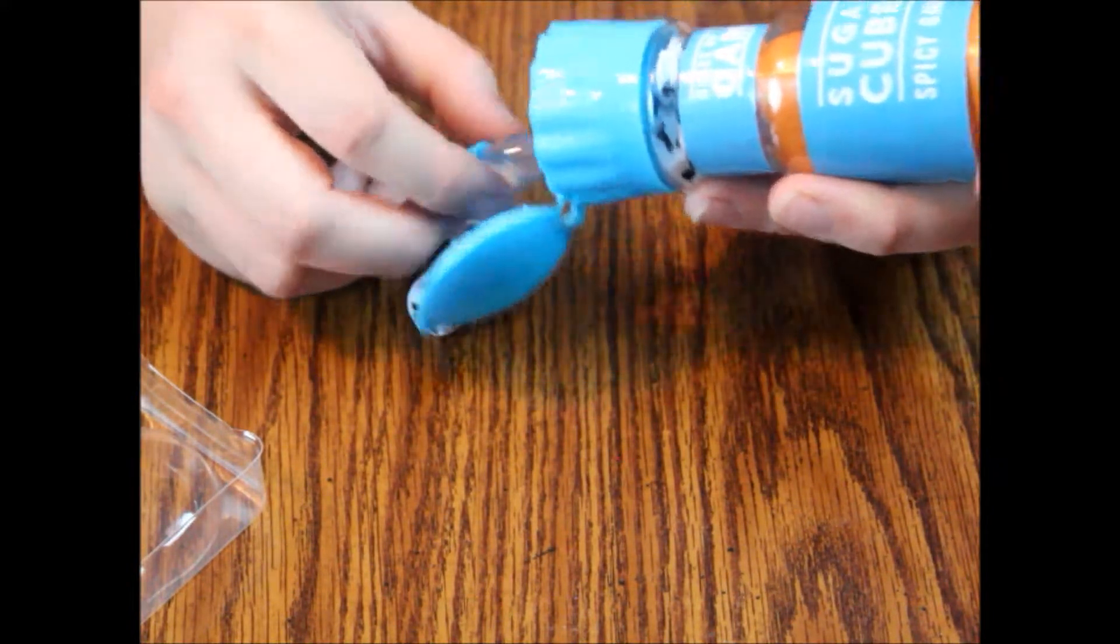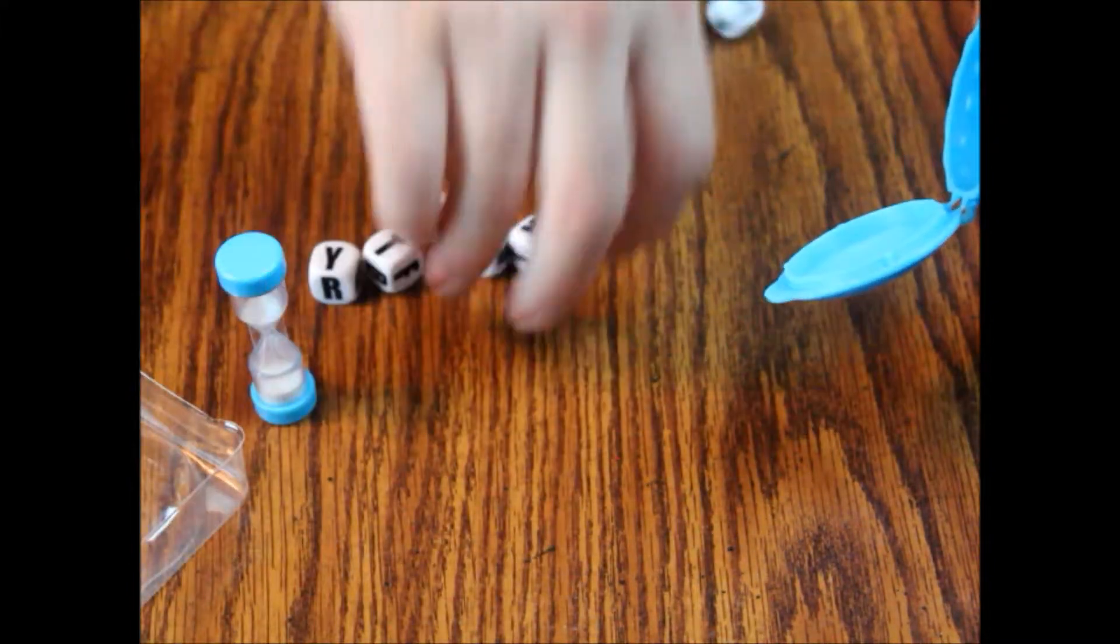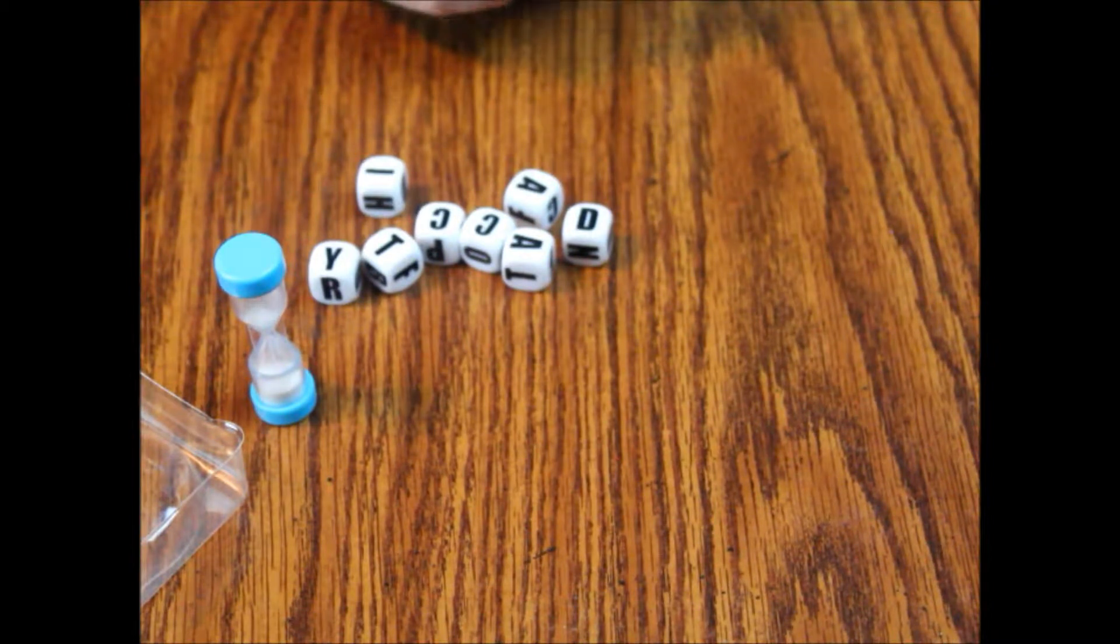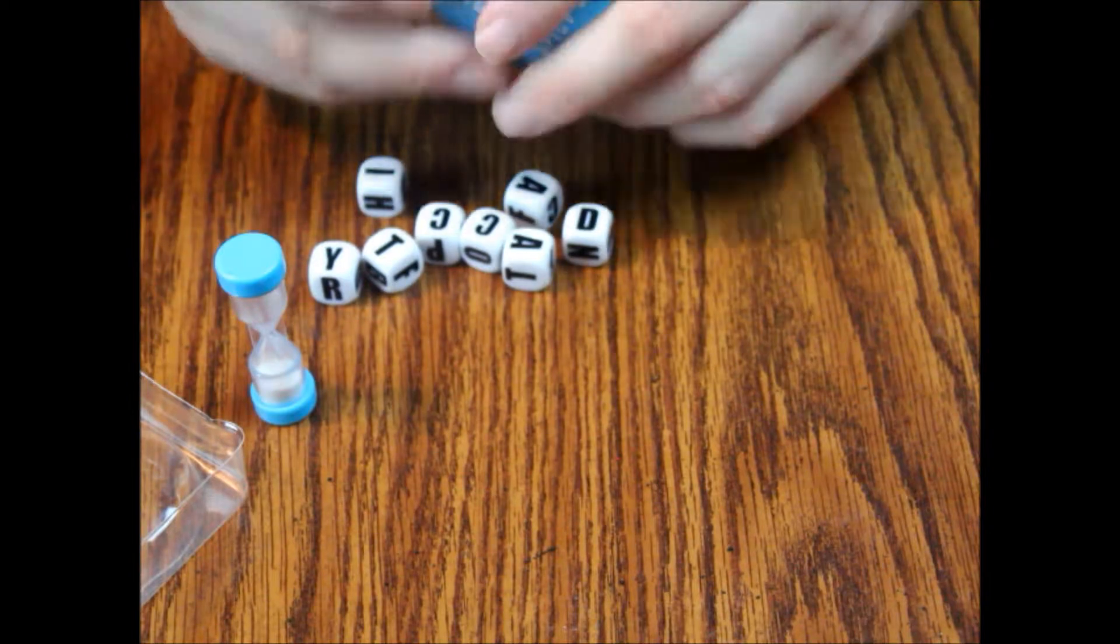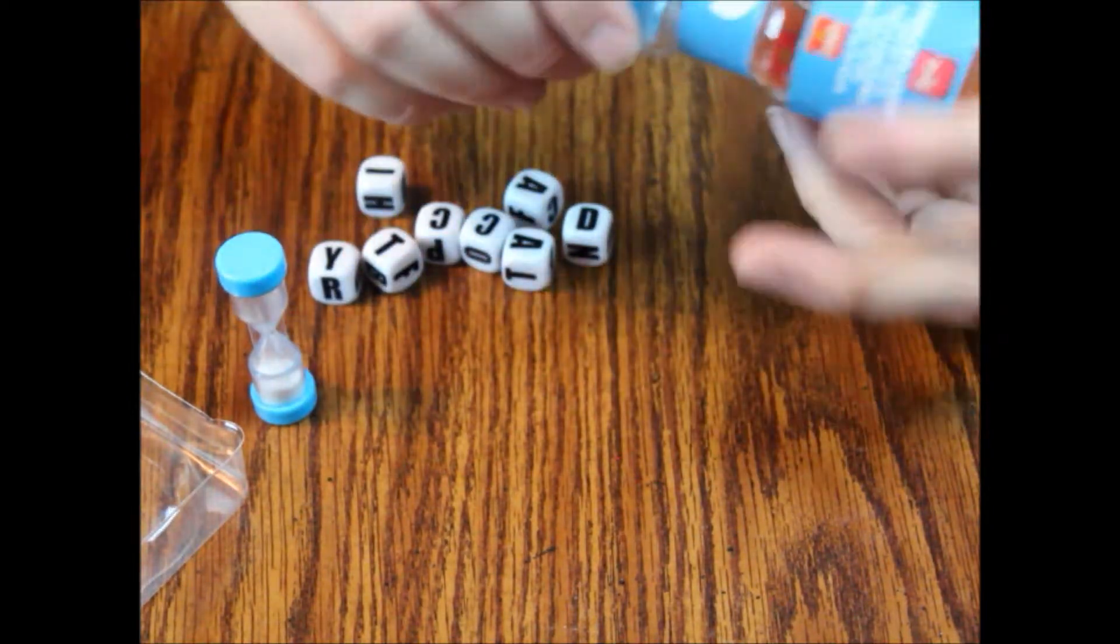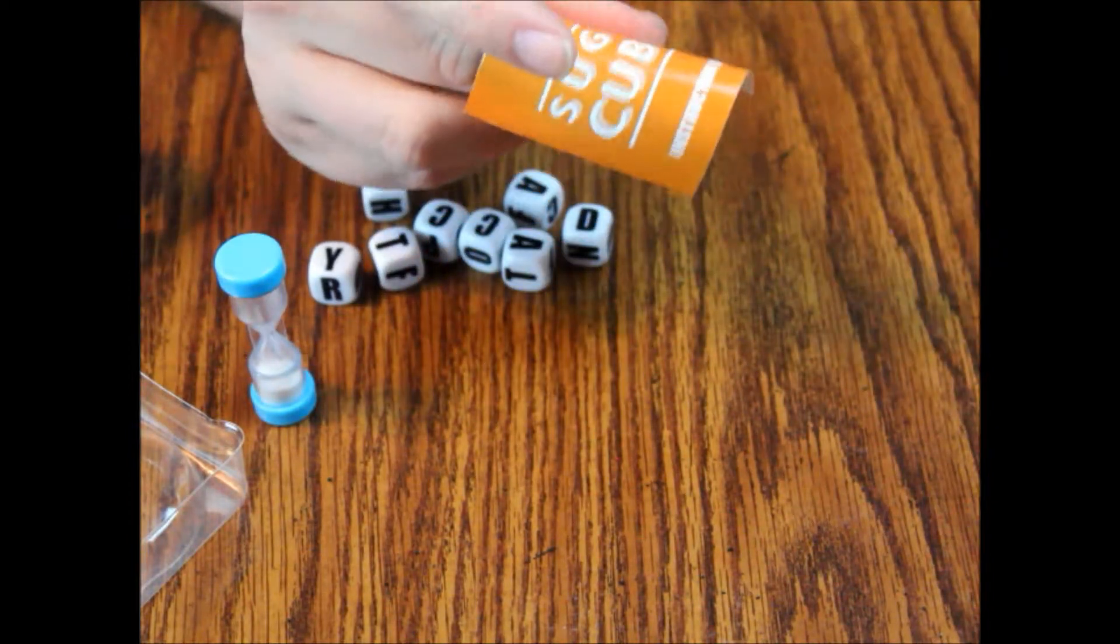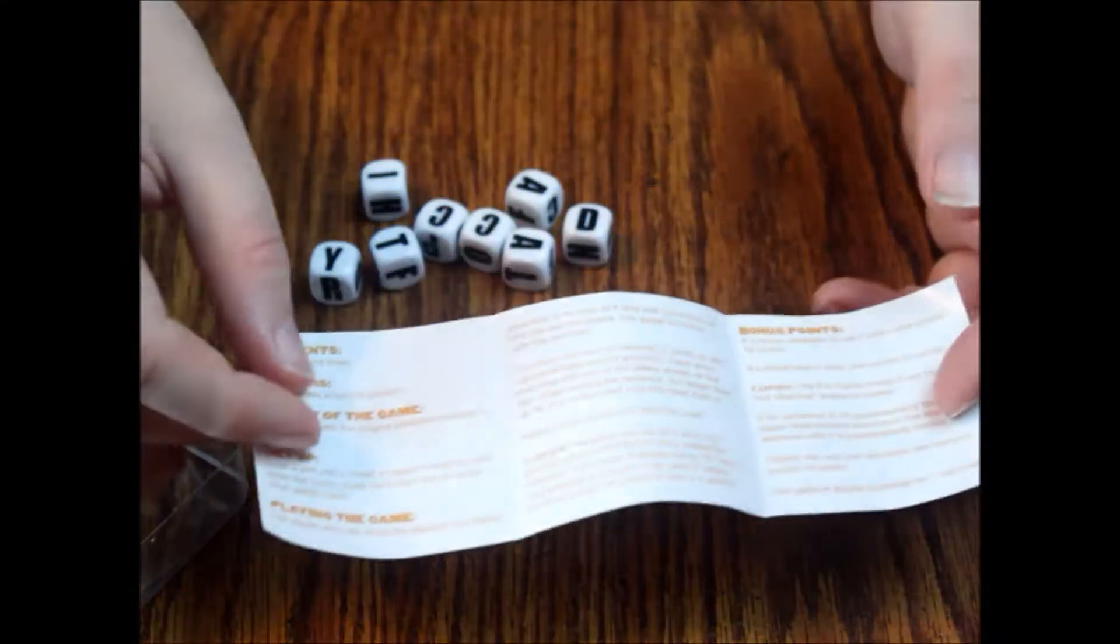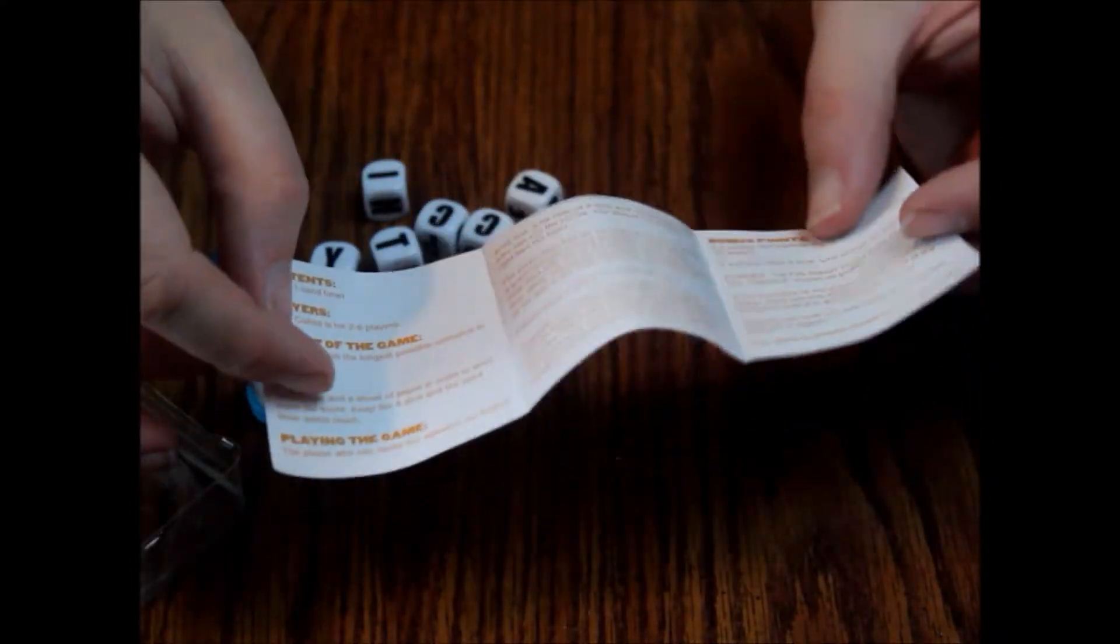Now in here we've got some dice and a timer. Now you're going to have eight dice, the sand timer, and the instructions. With the instructions you'll want to take the lid off or it'll get really destroyed and then pull it out. The instructions are super easy. It's a couple paragraphs on a folded sheet of paper. That's it.